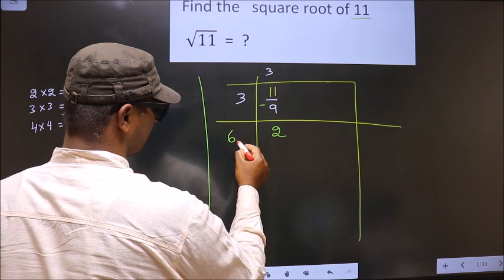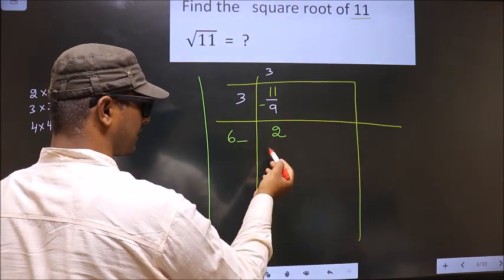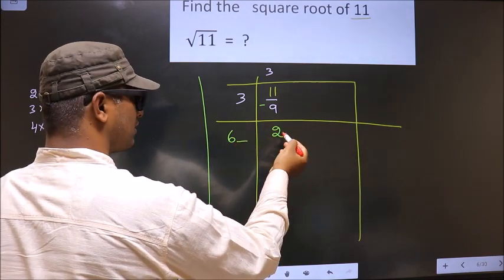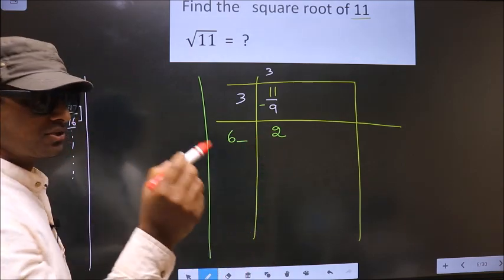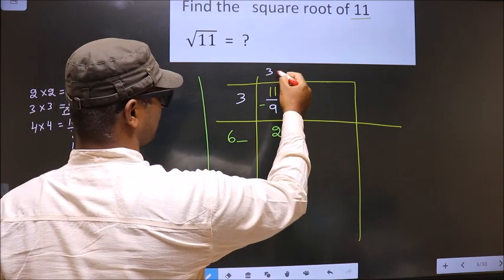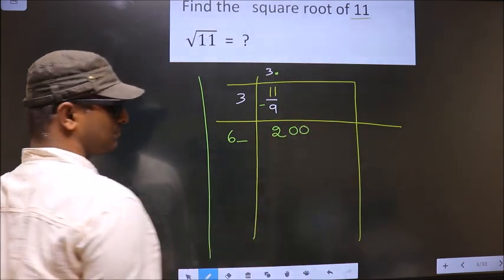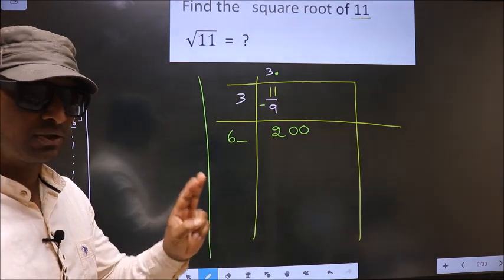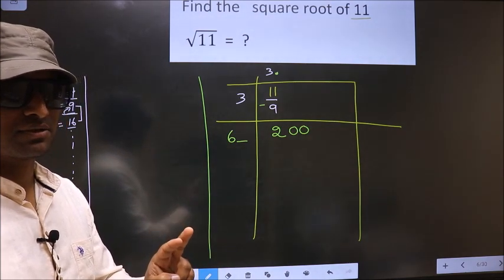Now I have to write a number here, but this number will be smaller than the remainder. In normal division we put a dot and take a zero, but while finding the square root you put a dot and take two zeros — that is the rule.